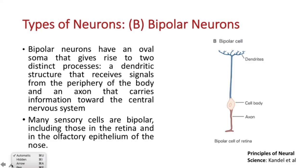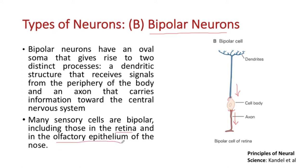We will now look at bipolar neurons. The bipolar neuron has an oval soma, and as you can see, there are two different processes: dendrites come in on one part and join the cell body, and the axon triggers and takes the signal out on the other part. Because of these two polar parts, this is the bipolar configuration. Many sensory cells are actually bipolar — for example, sensory cells from the retina and from the olfactory system of the nose are bipolar in nature.